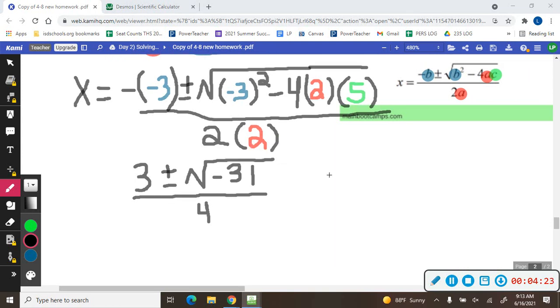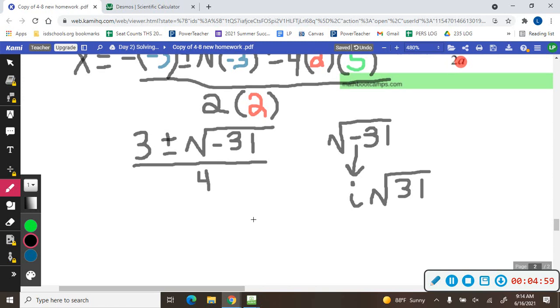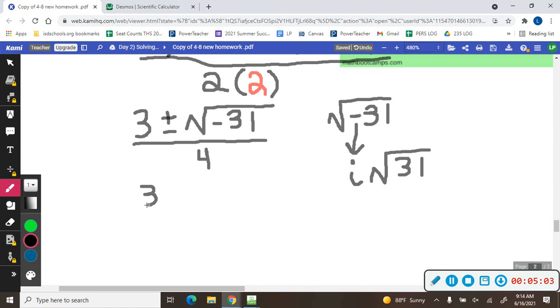Now, from there, we're going to simplify square root of negative 31. I'll do it over here. 31 is what we call a prime number. But the negative, square root of negative 1, that makes i. And 31, because it's prime, the only thing that goes into 31 is 1 and 31. This is going to stay square root of 31. So all that happened was the negative came out to make an i because the square root of negative 1, by definition, is i. So I can now replace this and say, okay, this is 3 plus or minus i square root of 31 over 4.